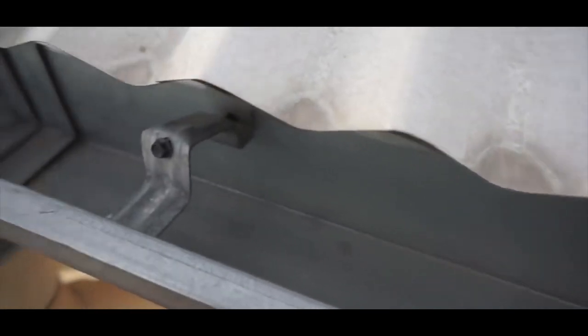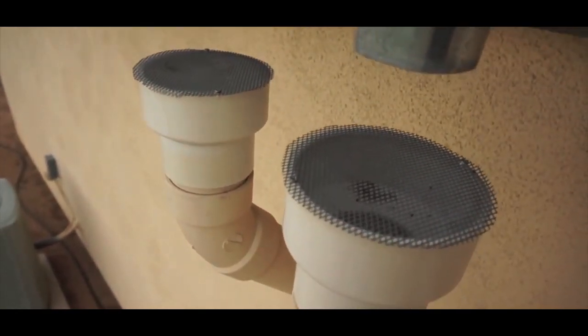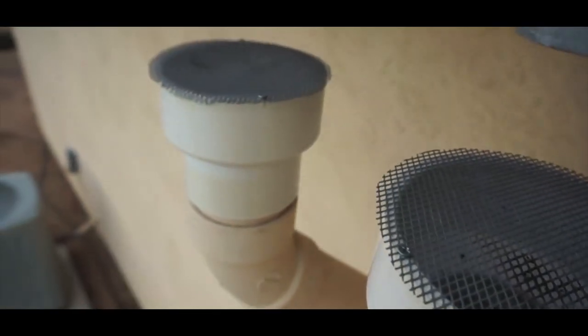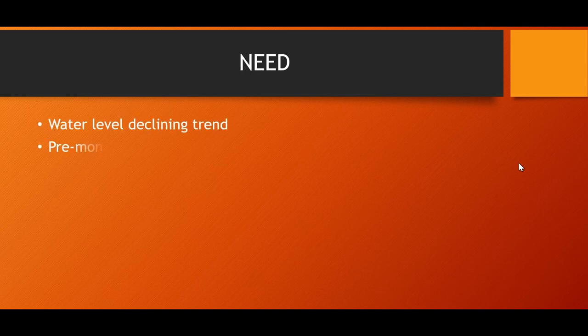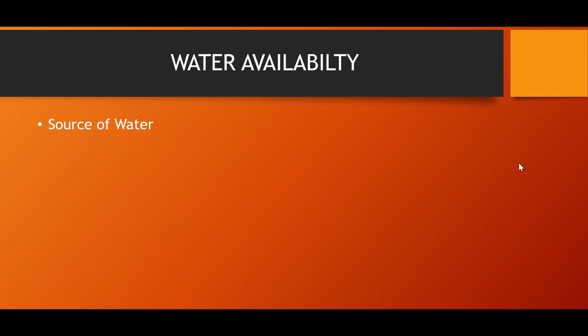We must have the data of groundwater levels both during pre-monsoon and post-monsoon periods. If there is no quantitative depletion but the groundwater quality is deteriorated, we may still consider rainwater harvesting structures through different techniques. If the need is justified, the second point is: which type of water is available to recharge the groundwater? There are two major sources. One is rainwater — as the name suggests — because rainwater is one of the purest forms of water except for the first spell of rain.